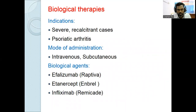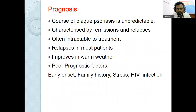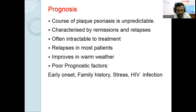Prognosis: the course of psoriasis is unpredictable, characterized by remissions and relapses. It is often intractable to treatment and relapses in most patients, though it improves in warm weather. Poor prognostic factors include smoking, alcohol, stress, HIV infection, positive family history, and early onset of disease.